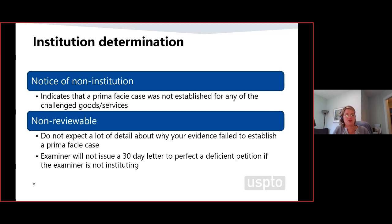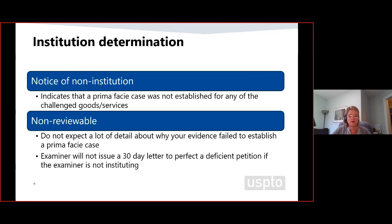The director's decision to institute or not is non-reviewable. If the director decides not to institute, the examiner will indicate that the evidence was insufficient to establish a prima facie case, but the examiner will not provide a detailed description of how the evidence was insufficient. These notices are not designed to give the petitioner a roadmap for appeal — there's no appeal of the director's determination. Instead, I would direct prospective petitioners to review the cases where the director instituted proceedings and compare the evidence that worked in those cases — that's your roadmap for finding a successful future petition.